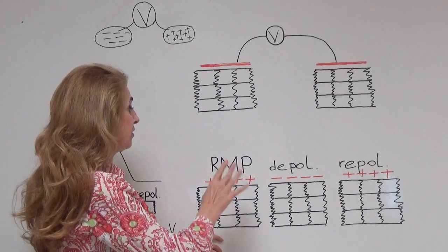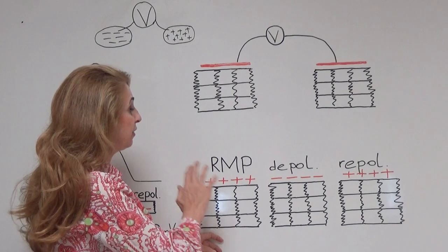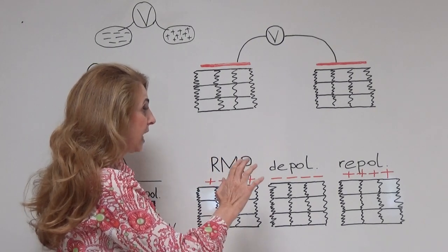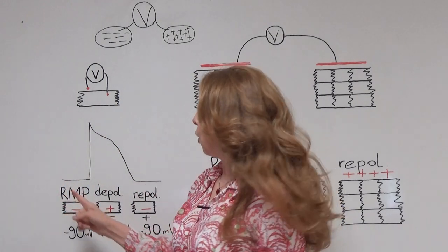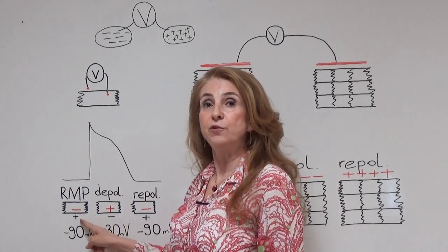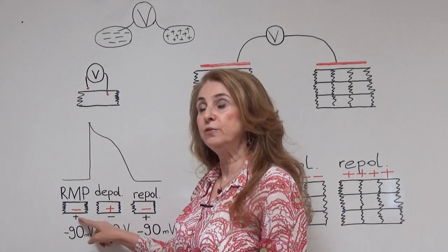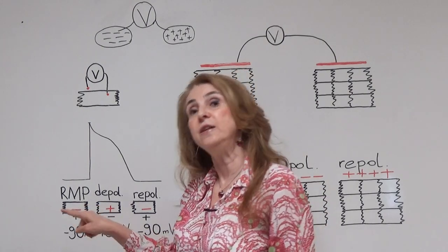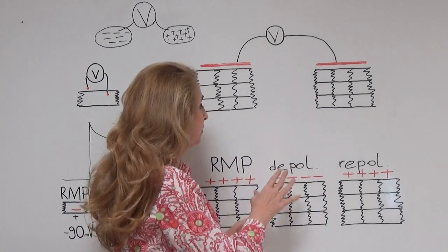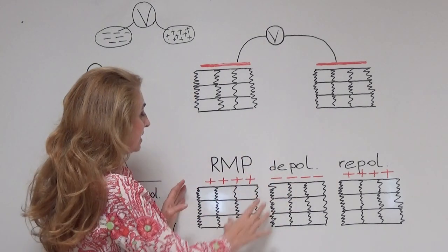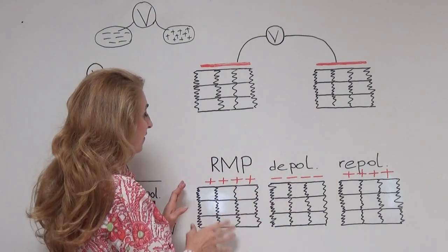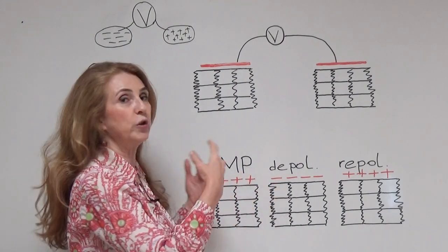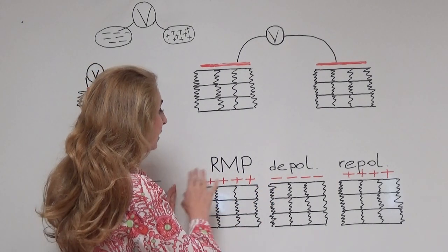In extracellular recording we are interested in the charges outside of the cells. This is the opposite of intracellular recording, where we are interested in the inner side of the cell membrane. During the resting membrane potential, this group of cells is positively charged on the outside.